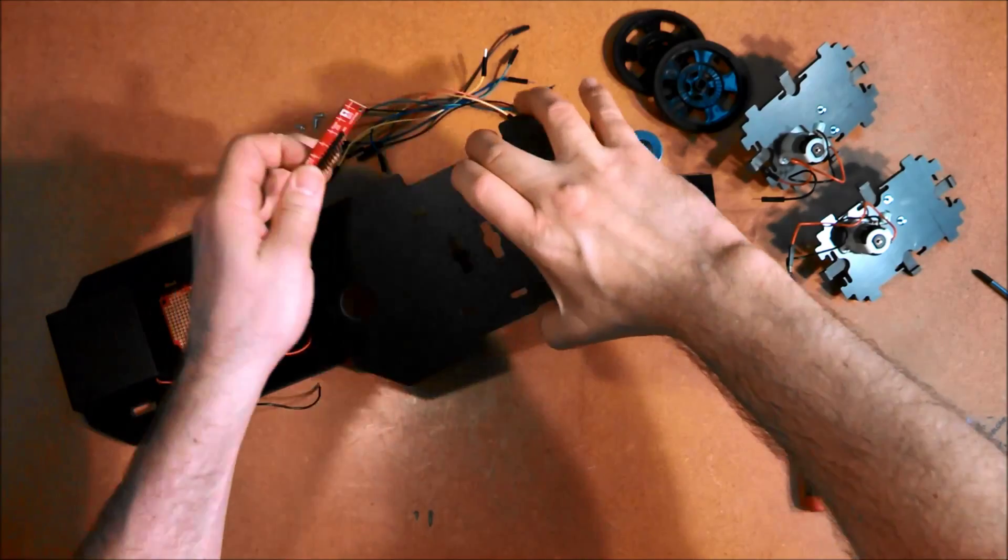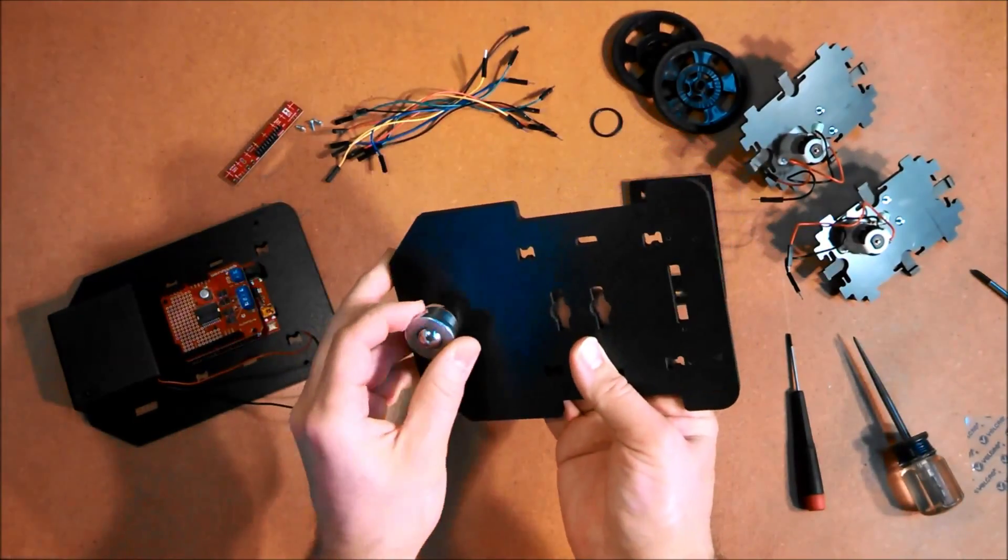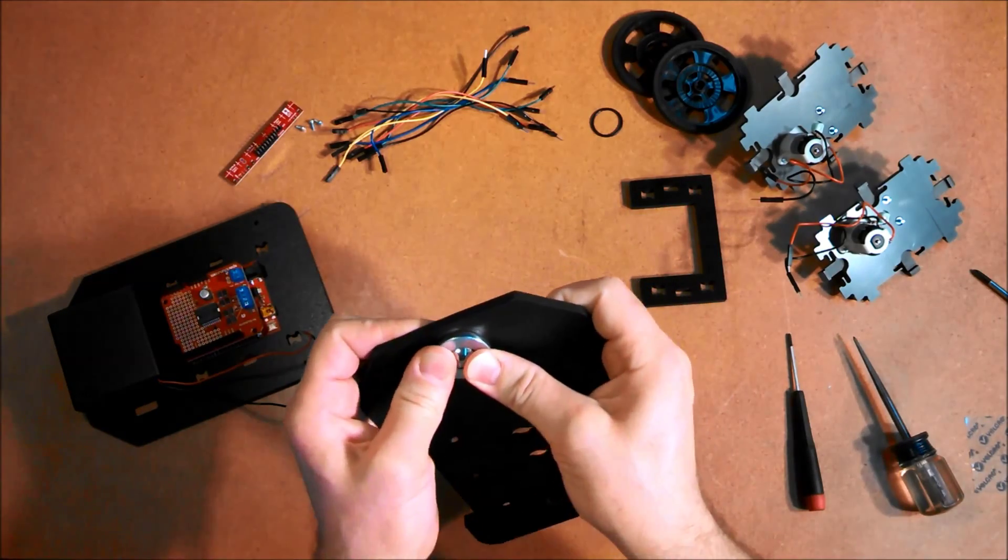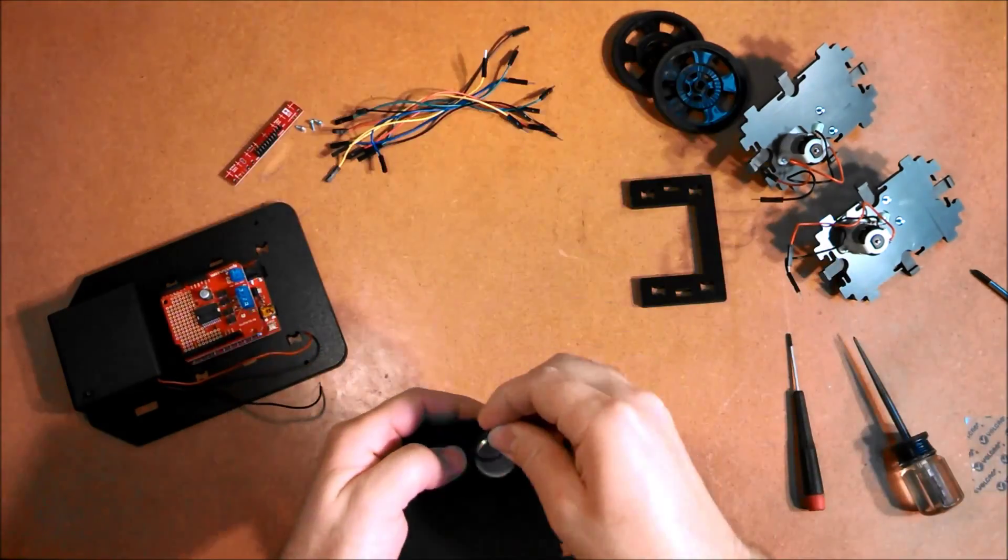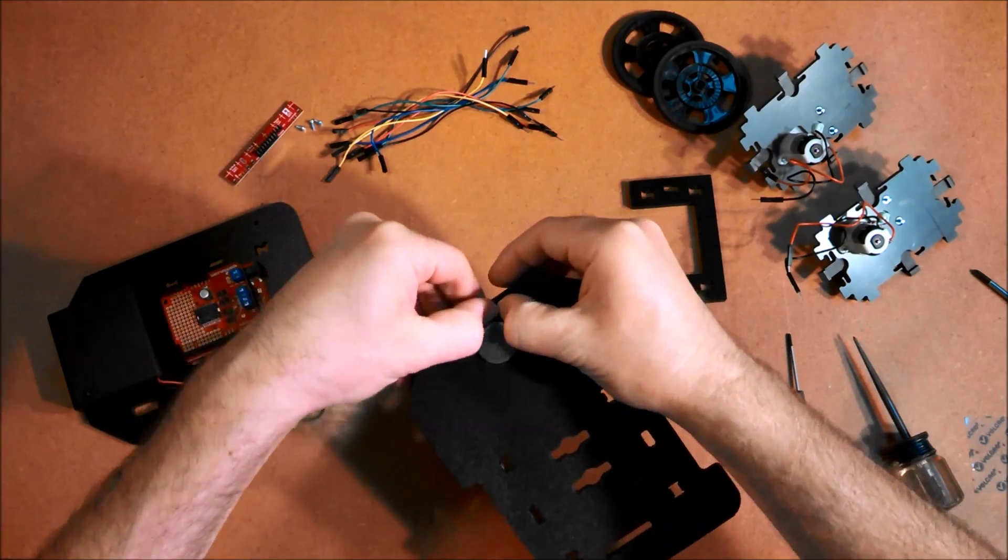I'm going to screw on the line sensor. First, I'll actually put in the ball caster. It should be a pretty snug press. And then we have an O-ring just to make sure it doesn't come out. Push it all the way in.